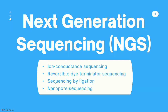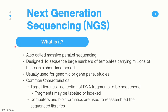Next, we will talk about next-generation sequencing (NGS). These include methods like ion conductance sequencing, reversible dye terminator sequencing, sequencing by ligation, and nanopore sequencing. NGS methods are also known as massive parallel sequencing techniques, designed to sequence large numbers of templates carrying millions of bases in a short time. They are usually used for genomic or gene panel studies, use target libraries of DNA fragments which may be labeled or indexed, and require powerful computers and bioinformatics to reassemble the sequenced libraries.